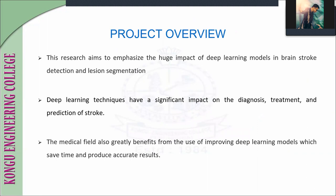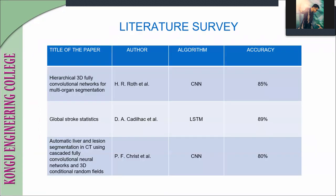This is our project overview. The main aim of this research is to emphasize the huge impact of deep learning models in brain stroke detection and lesion segmentation. Deep learning techniques have a significant impact on the diagnosis and prediction of stroke. The medical field also benefits greatly from the use of improving deep learning models, which saves time and produces accurate results.